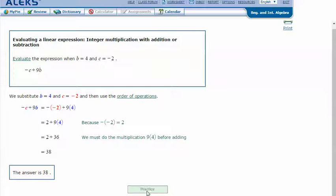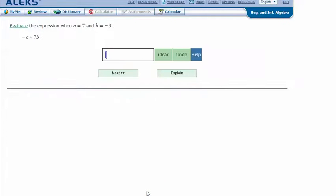Let's try another one. Evaluate the expression when a equals 7 and b equals negative 3.